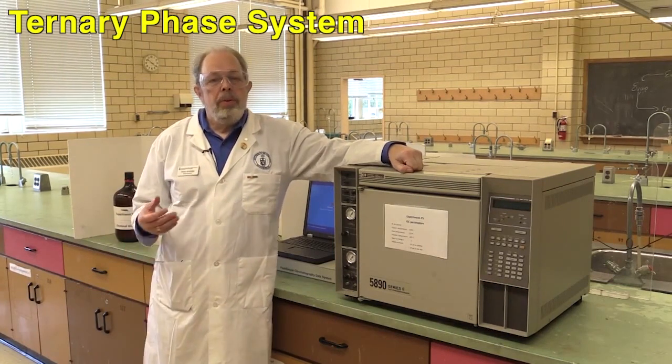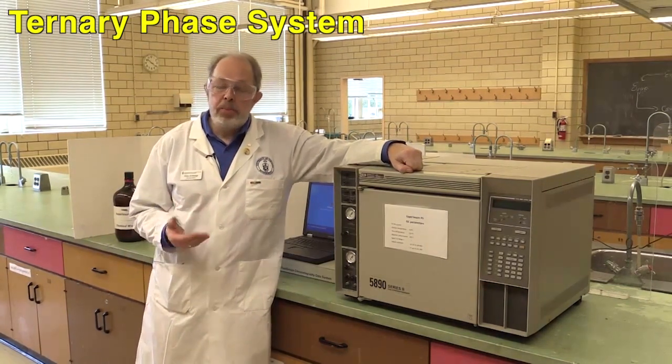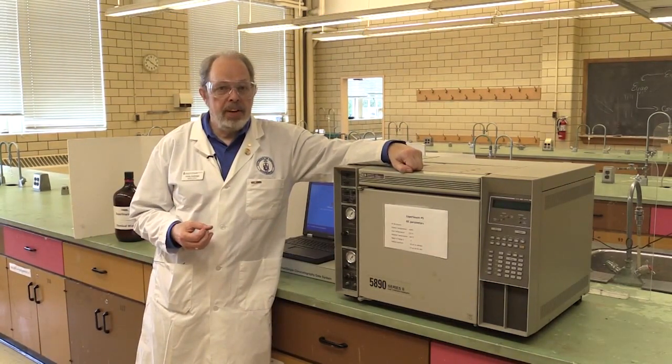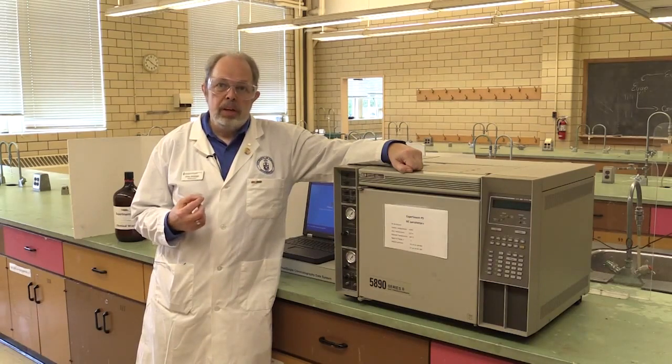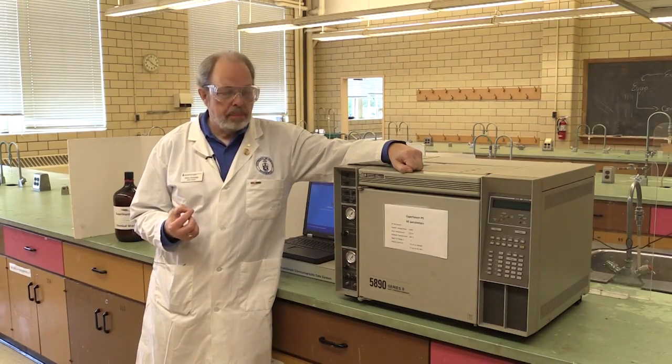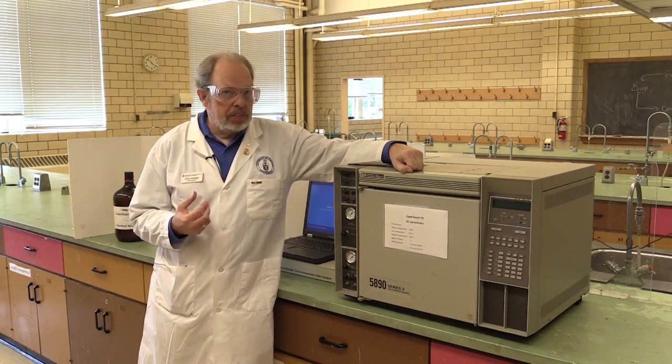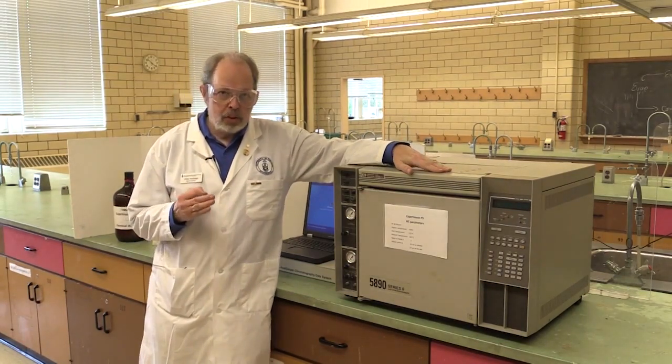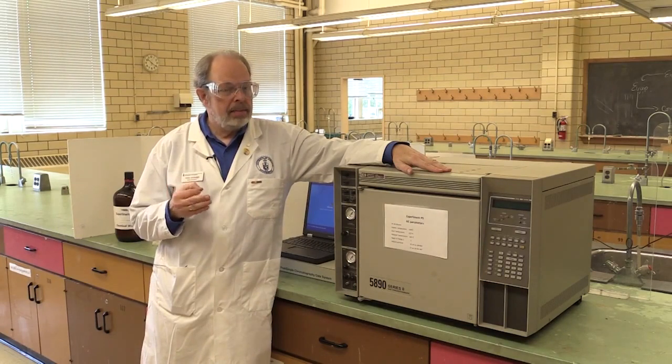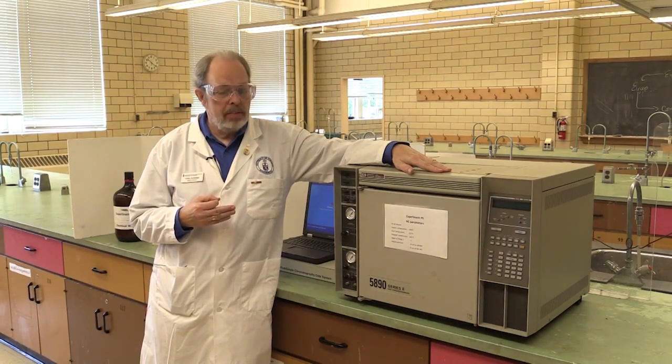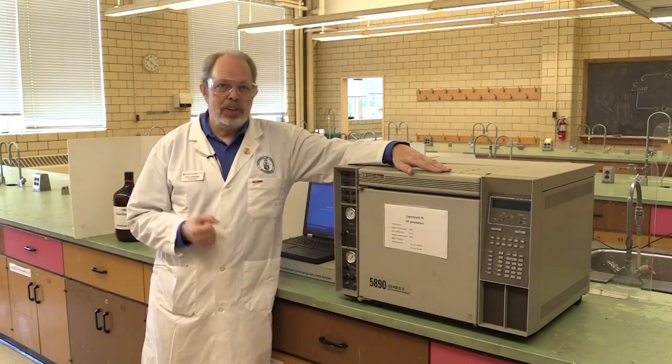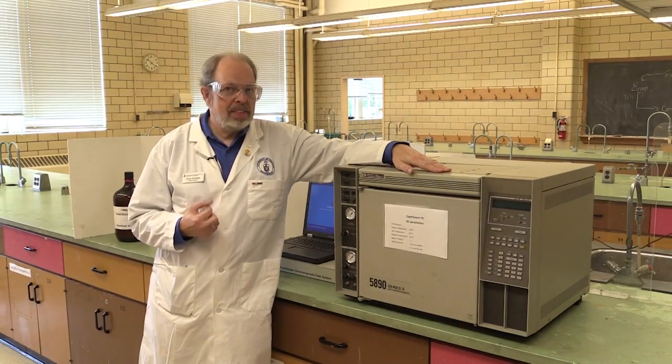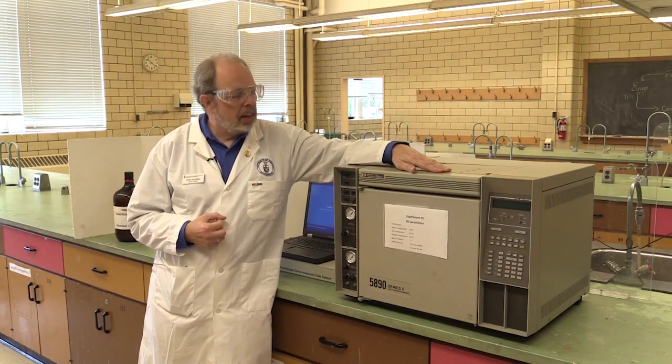This video shows how to operate the instrumentation for experiment P5, which is a ternary two-phase system with three components. This instrument is a gas chromatograph. You're going to be analyzing using a gas chromatograph. You've sent samples for gas chromatography last year, but this time you'll actually use the machine yourself.